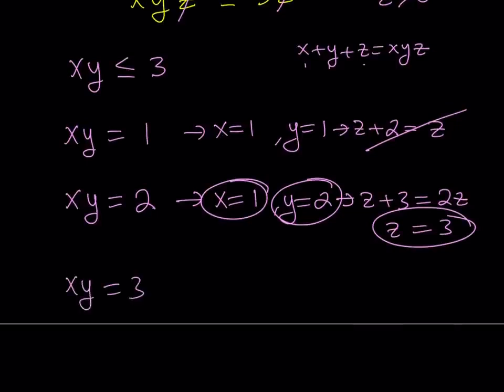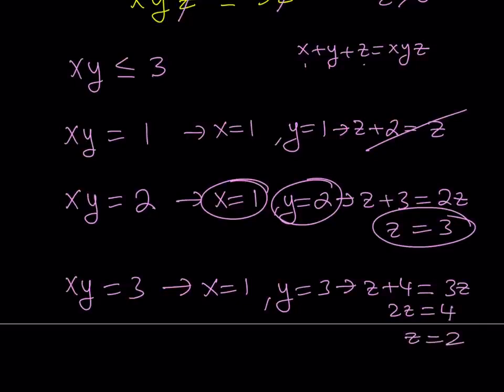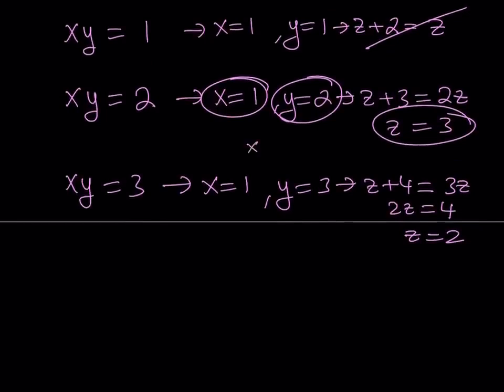Let's take a look at the other case. xy equals 3. Now, if xy equals 3, x is less than or equal to y, and 3 is a prime number. So we can say that x must be 1 and y must be 3. But if you substitute these values into the original problem, you're going to get z plus 4 is equal to 3z. From here, you're going to get 2z equals 4. z equals 2. Now, notice that this looks like a nice ordered triple, but the problem is we assume that x is less than or equal to y, and y is less than or equal to z. So this ordered triple does not satisfy what we want. But guess what? At the end, it's actually going to work. But let's just say for now that it didn't satisfy the original one, so the only solution we got from here is 1, 2, and 3.